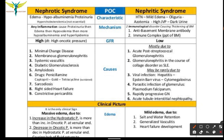Causes of nephrotic syndrome include minimal change disease, membranous glomerulonephritis, systemic vasculitis, diabetic glomerulosclerosis, amyloidosis, drugs like penicillamine and captopril, sarcoidosis, right-sided heart failure, and constrictive pericarditis.